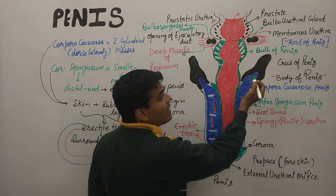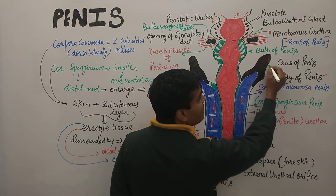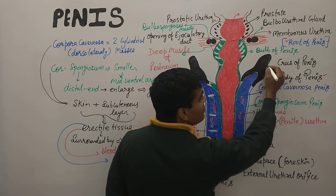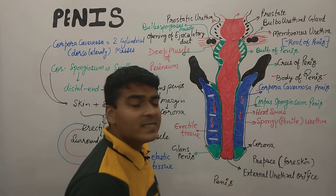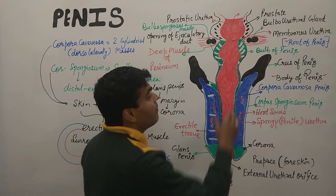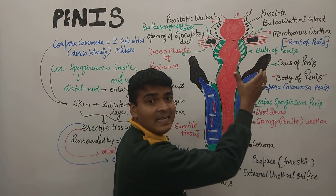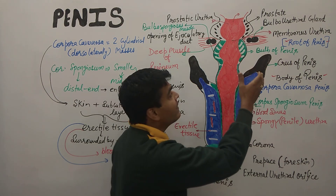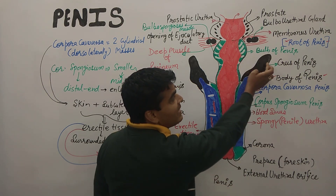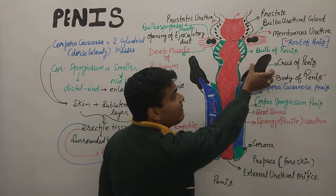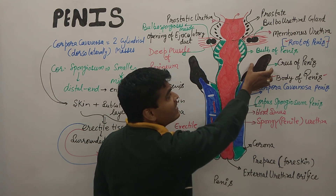The second part of the root of the penis is the crus of the penis. The crus of the penis is a laterally separated structure from the bulb of the penis — found laterally to the bulb.